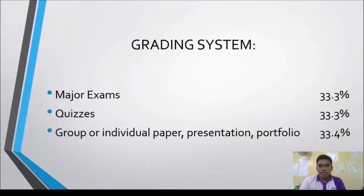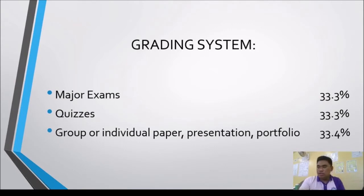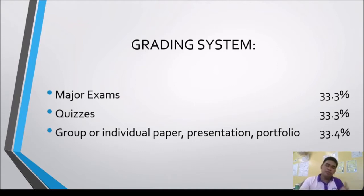For our grading system: major exams — Prelim, Midterm, and Final — will be 33.33% of your grade. Quizzes is 33.3%, and group or individual paper presentation, assignment, portfolio, and seat work will be 33.4%. The total is 100%.